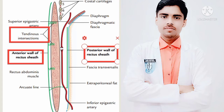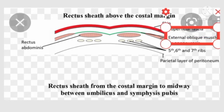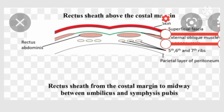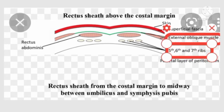Now we will discuss about the formation of the rectus sheath. Above the costal margin, the anterior wall is formed by the external oblique aponeurosis, as you can see in the figure. The posterior wall above the costal margin is deficient, and the rectus muscle rests directly on the fifth, sixth, and seventh costal cartilages, as seen in the figure.